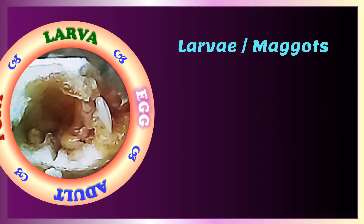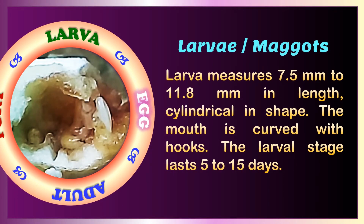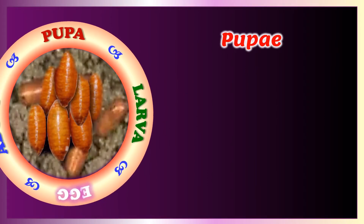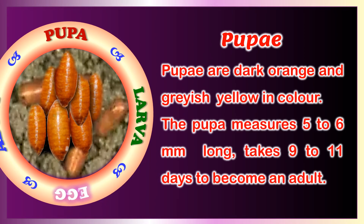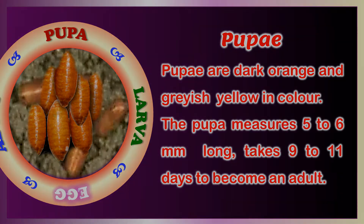Larva measures 7.5 mm to 11.8 mm in length, cylindrical in shape, with a curved mouth with hooks. The larval stage lasts 5 to 15 days. Pupa are dark orange and grayish yellow in color, measuring 5 to 6 mm long, and take 9 to 11 days to become an adult.